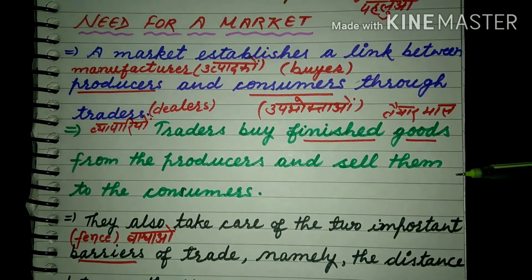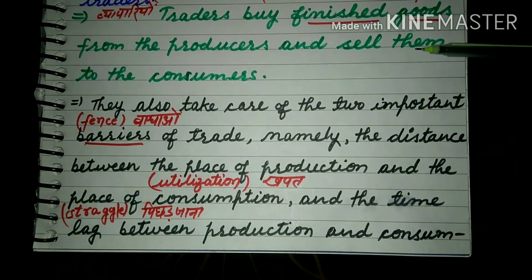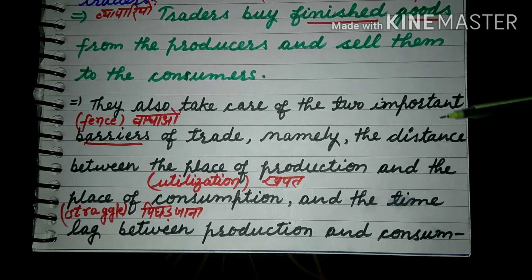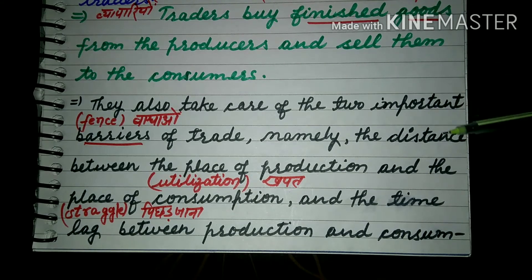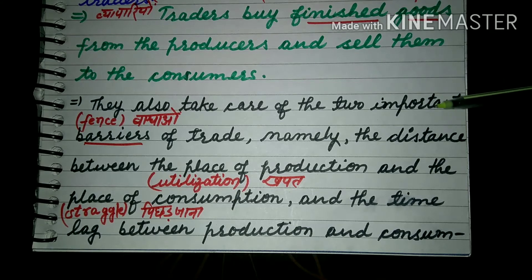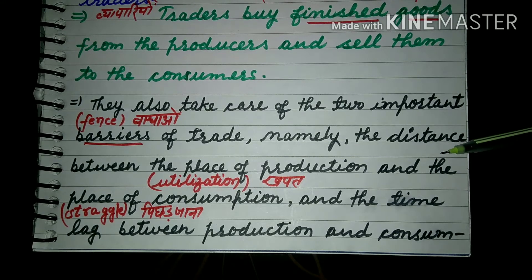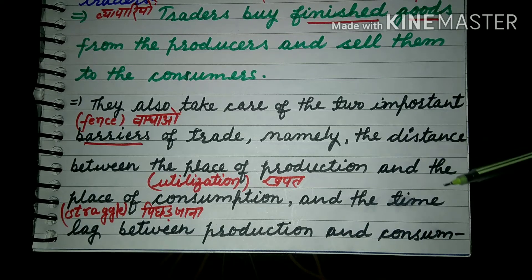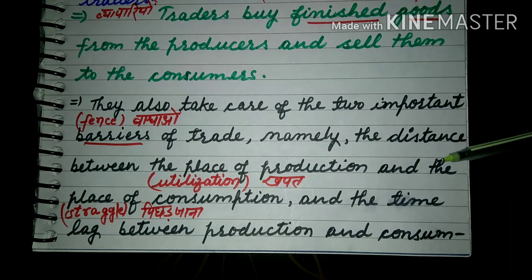They also take care of the two important barriers of trade — namely, the distance between the place of production and the place of consumption, and the time lag between production and consumption. Time lag मतलब पिछड़ जाना — अगर production और consumption के बीच की distance में time lag हो जाए तो बहुत नुकसान उठाना पड़ता है।